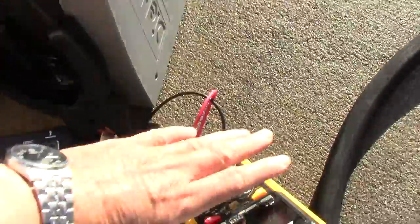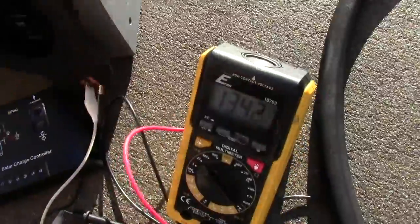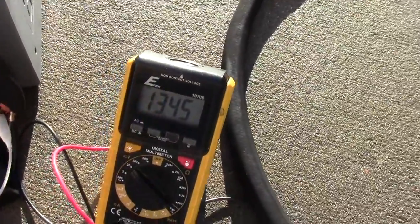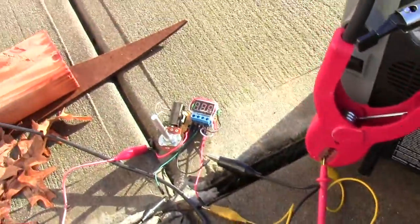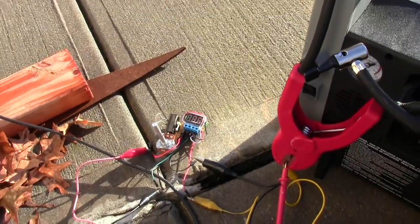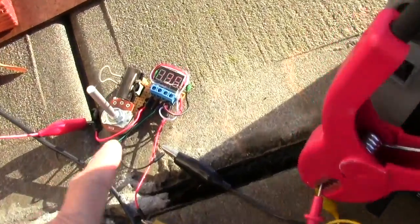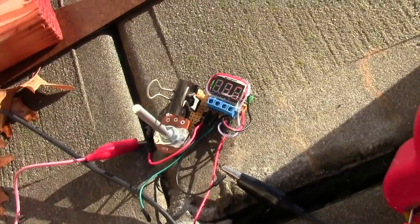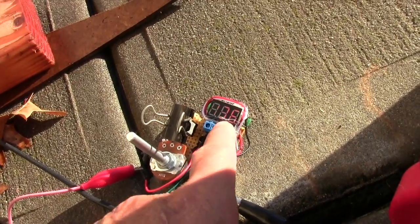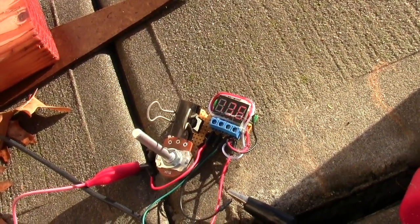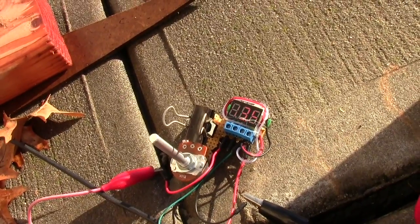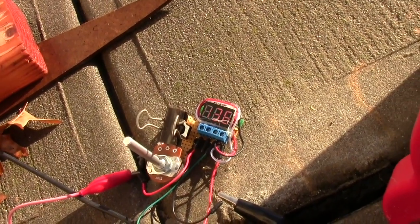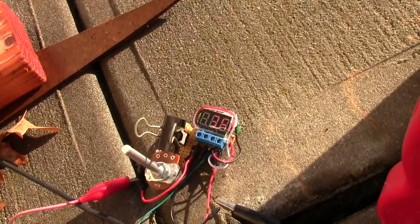Now because this is an adjustable regulator, you can set the voltage to anywhere from 1.25 to like 30 volts or over 30 volts or something. So I just set it to about 13.6 and the charging will pretty much stop at 13.6 volts, it won't go higher than 13.6 volts.